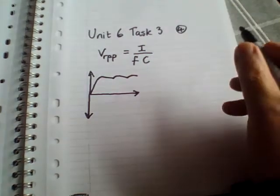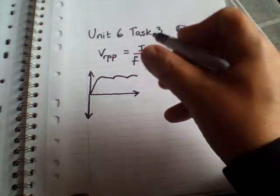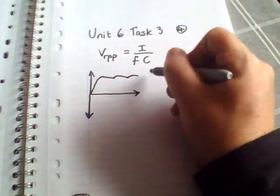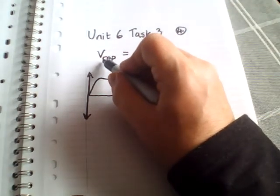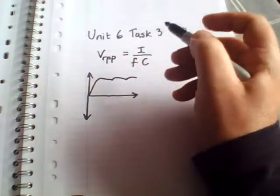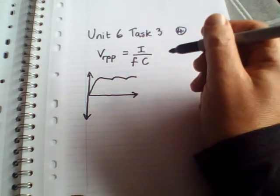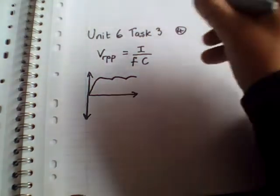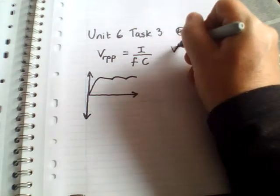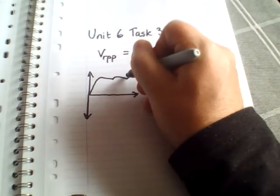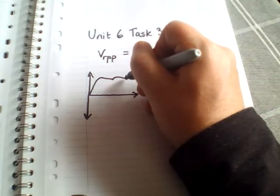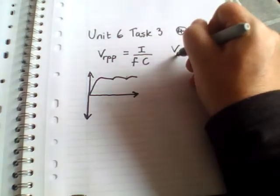Now, in this example, this is the peak-to-peak of the ripple voltage. Peak-to-peak is basically the difference between the top and the bottom of that ripple.